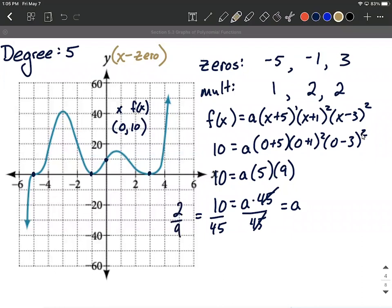All right the only thing left to do is take this value for a back up, plug it back in where a was here, and we'll have our function. So we can say f of x, function we're looking for is going to be two ninths multiplied by x plus five multiplied by x plus one squared multiplied by the quantity x minus three squared. I'm not going to take the time to multiply this all out. That would take a long time to get into the general form. Let's just leave that as our answer.